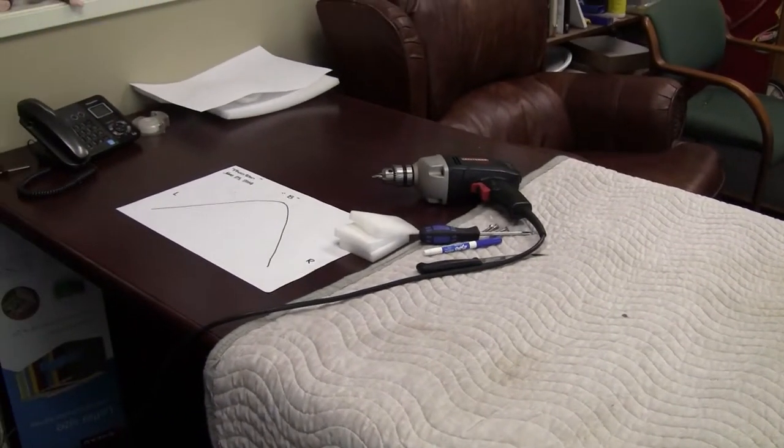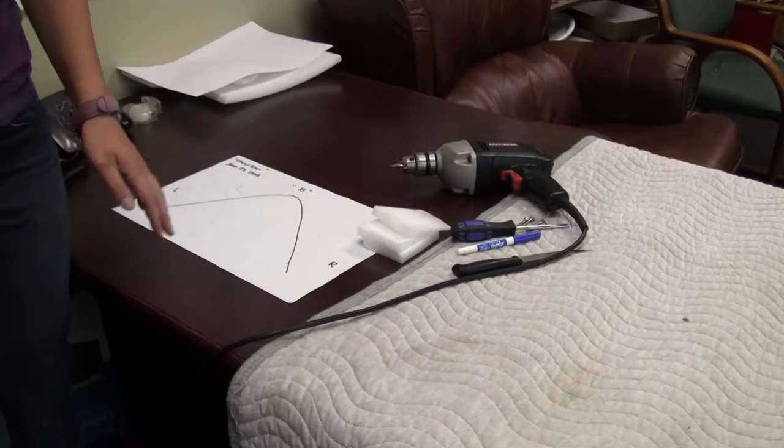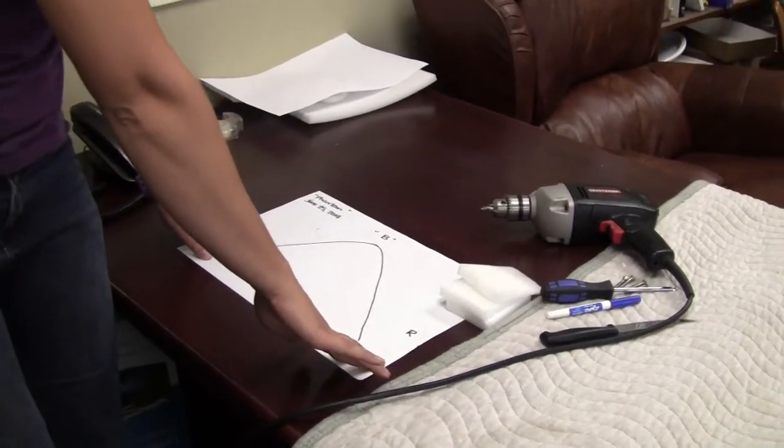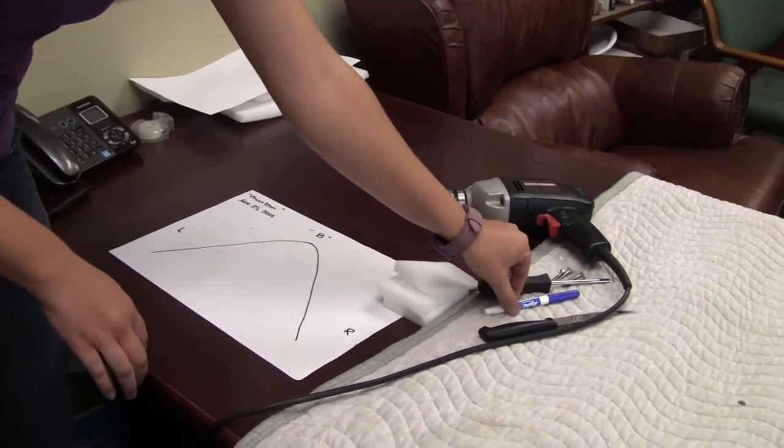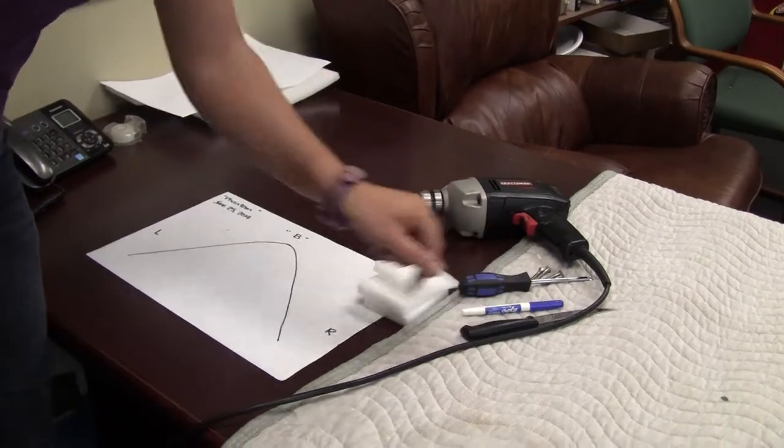To start you'll assemble your materials which will be the templates that you took. You'll need a pen, a saddle with the panels and discs unattached.